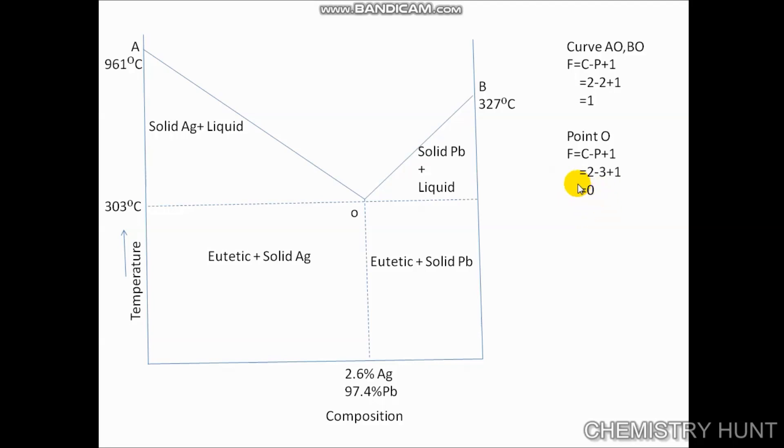The third thing we see is area AOB, which represents the solution of lead and silver. If a sample of lead containing less than 2.6% silver is taken, say B', on allowing the mass to cool, the temperature will fall without change in composition until point P' is reached on curve BO. On lowering the temperature, lead begins to separate out and the composition varies.